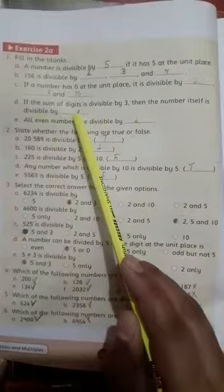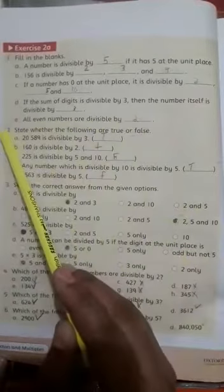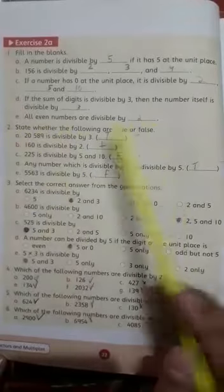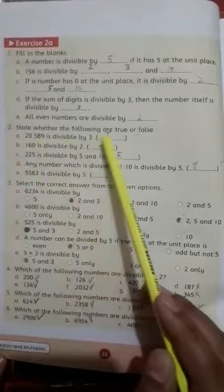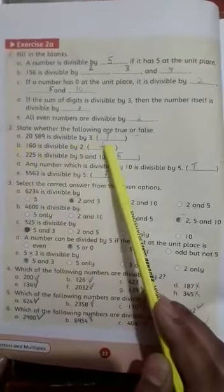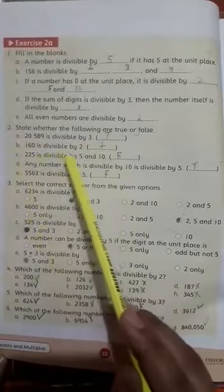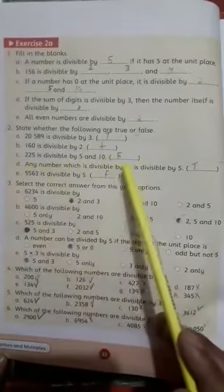Second, state whether the following are true or false. A: 20589 is divisible by 3 - true. B: 160 is divisible by 2 - true. C: 225 is divisible by 5 and 10 - false. D: Any number which is divisible by 10 is divisible by 5 - true.